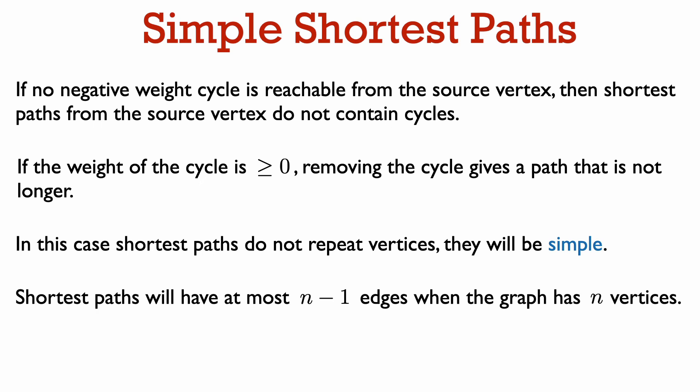We will mostly look at graphs that do not have negative weight cycles. In this case we can make some basic observations: if no negative weight cycle is reachable from the source vertex, then without loss of generality, shortest paths from the source will not contain cycles. If a path contains a non-negative weight cycle, removing that cycle still leaves a valid path without increasing its length. Therefore shortest paths will not repeat vertices — they will be simple paths — and in particular the number of edges on any shortest path will be at most n-1 when the graph has n vertices. We will make use of this fact in the Bellman-Ford algorithm.